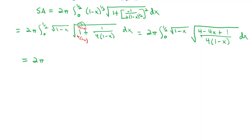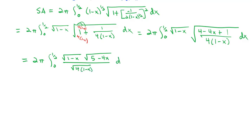Continuing to simplify, we've got 2π times the integral from 0 to 1/2 of the square root of (1 minus x) times the square root of (5 minus 4x) over the square root of 4 times (1 minus x) dx. The (1 minus x) terms under the square root divide out, and the square root of 4 is 2, giving a 2 on top and bottom that also divides out. So our integral simplifies down to π times the integral from 0 to 1/2 of the square root of (5 minus 4x) dx.